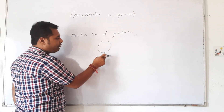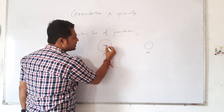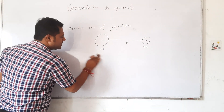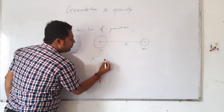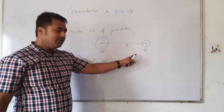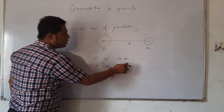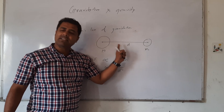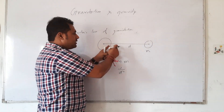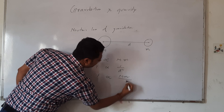In Newton's Law of Gravitation, consider one planet of mass capital M and another planet of mass small m. The force is inversely proportional to the square of the distance. Force is directly proportional to mass. Therefore, F is proportional to M times m divided by d squared.